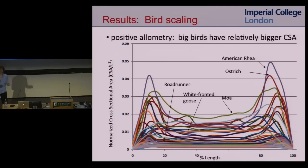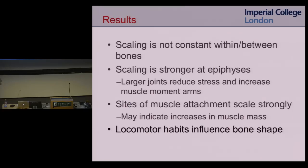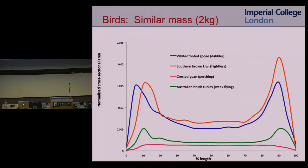What gets interesting is if we pull out birds of different locomotor habits but the same size — about two kilograms. The goose is a dabbler, the kiwi is completely flightless, the brush turkey can flap but not very far, and the guan spends a lot of time in trees. Birds that fly have much lower cross-sectional area than those that don't fly — mass is costly in flight, so if you're going to fly you want to minimize mass. For the kiwi it doesn't matter, so having very strong bones is a benefit. This indicates that locomotor habits are influencing bone structure.